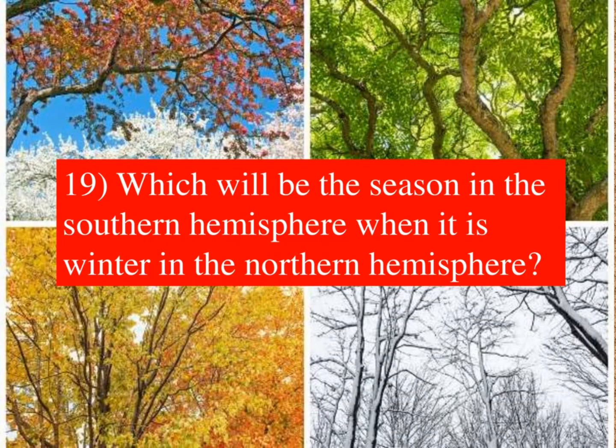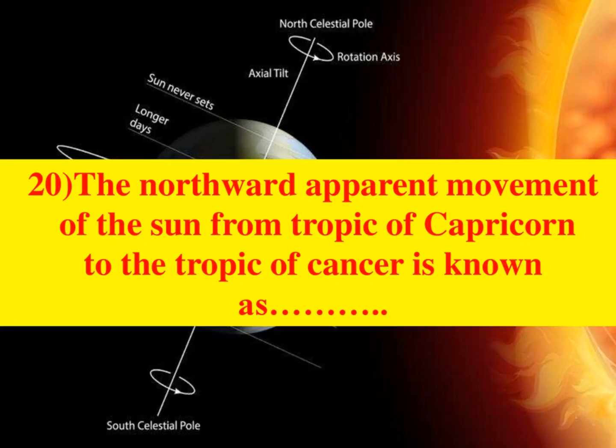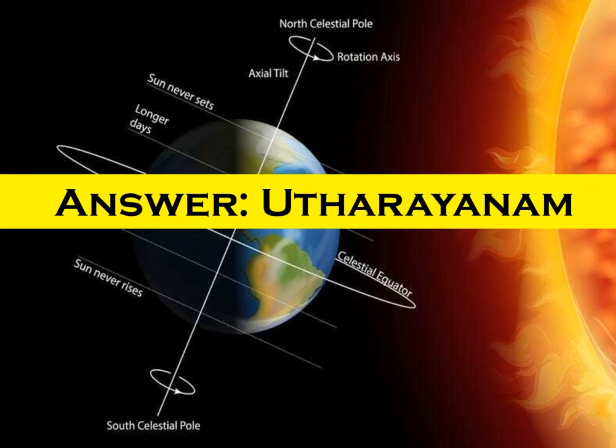Which will be the season in the Southern Hemisphere when it is winter in the Northern Hemisphere? Answer: Summer season. The northward apparent movement of the Sun from the Tropic of Capricorn to the Tropic of Cancer is known as Uttarayanam.